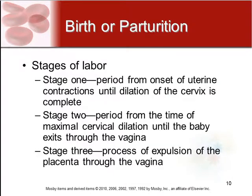Stage one is the period from the onset of uterine contractions until the dilation of the cervix is complete — this is more preparing for the delivery. Stage two is the delivery itself, the period from the time of maximum cervical dilation until the baby exits through the vagina.